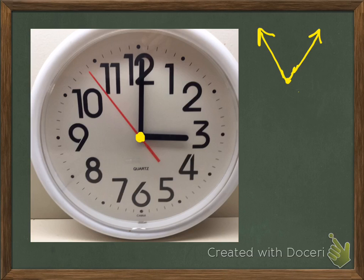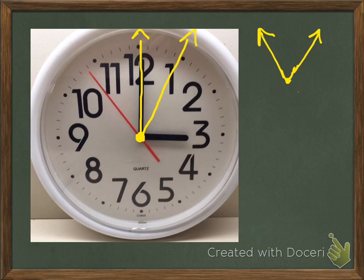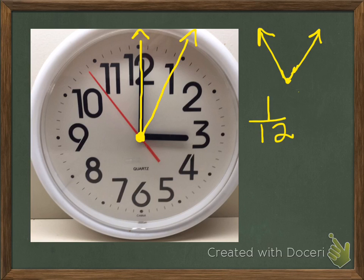I'm going to look at the minute hand and the hour hand to help me form those angles. I'm going to draw a line from the vertex point up to the 12 — that's going to be my first ray. I'm going to take my second ray and draw it right up through the number 1. I've got my circle, and I'm using the center point of the circle as my vertex point. The rays form the sides of the angle. If I draw a ray through the 12 and then through the 1, the measurement of that angle is 1/12 of the circle.